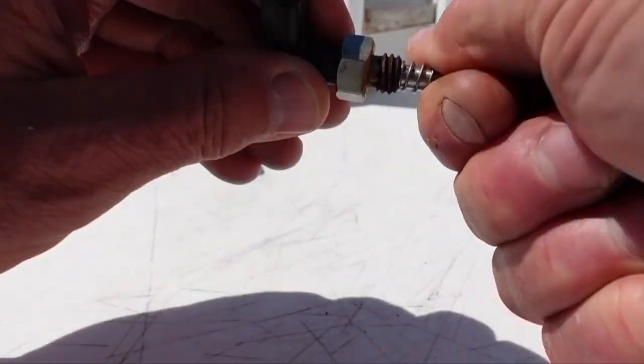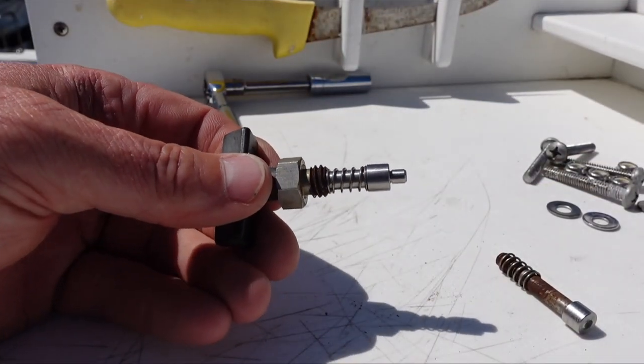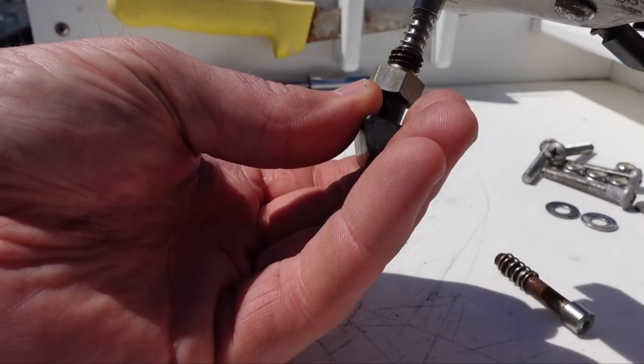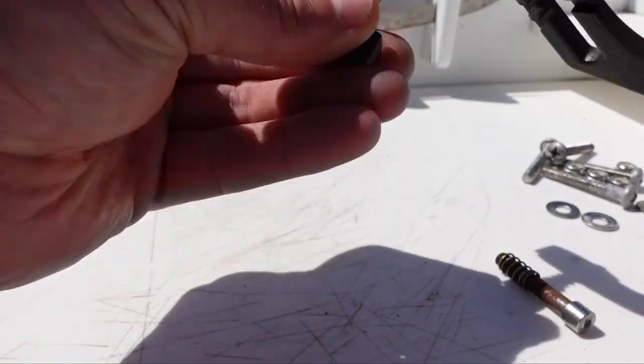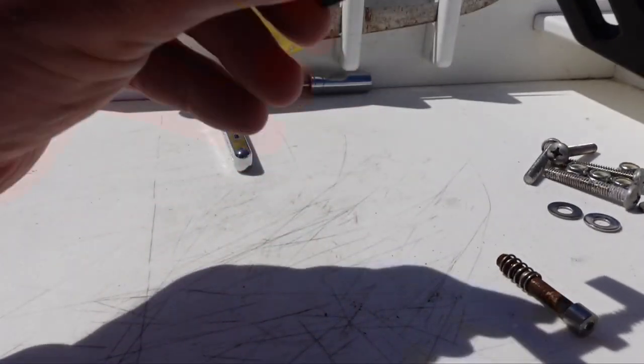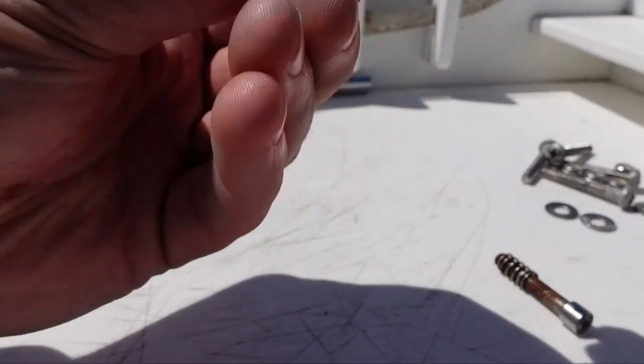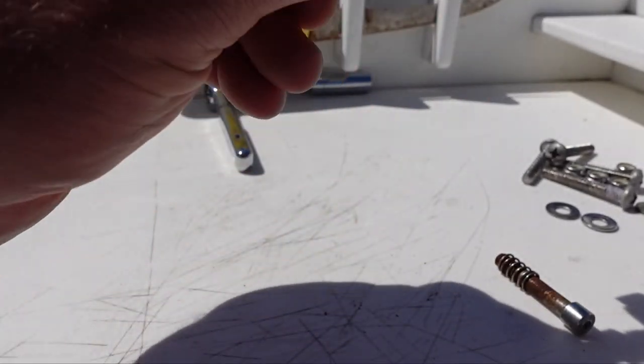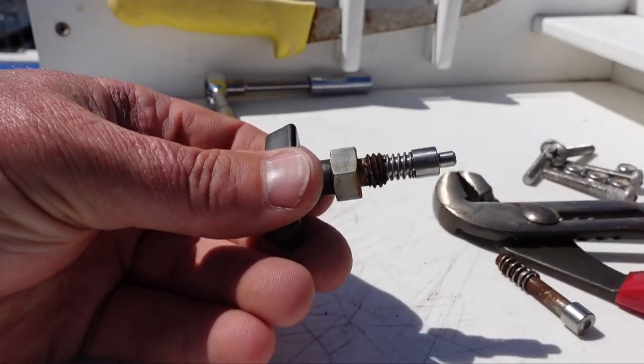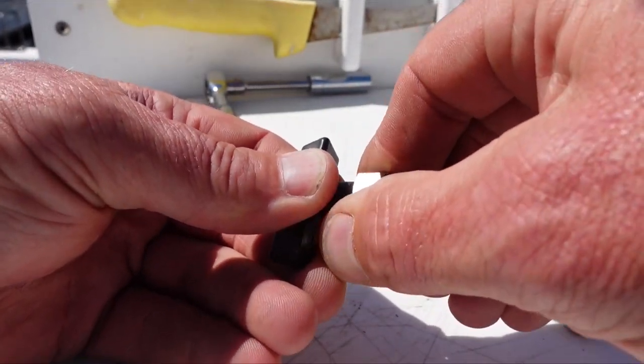You can tighten it down partly by hand, but you are going to need some channel locks or a pair of vice grips to tighten that all the way down. Okay, that's nice and snug. You can see there's the movement that we're looking for.